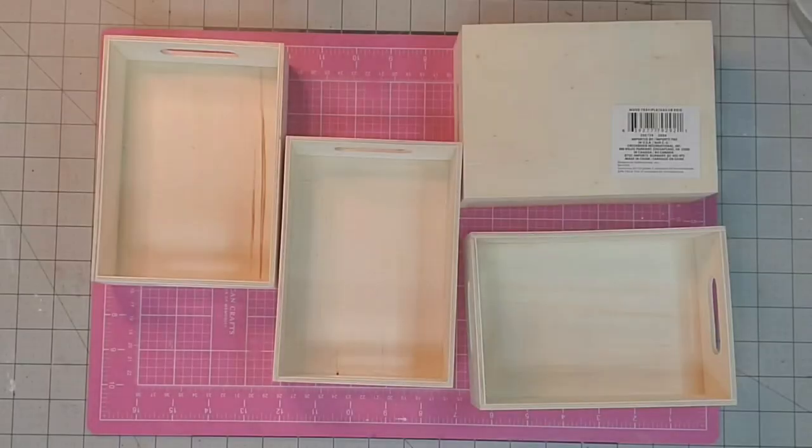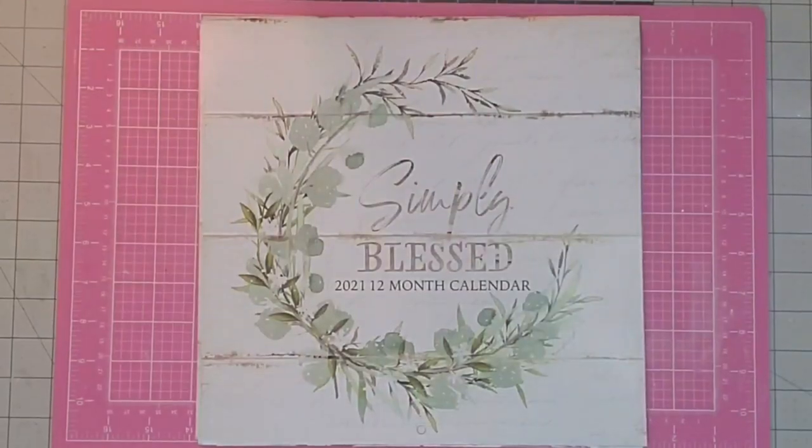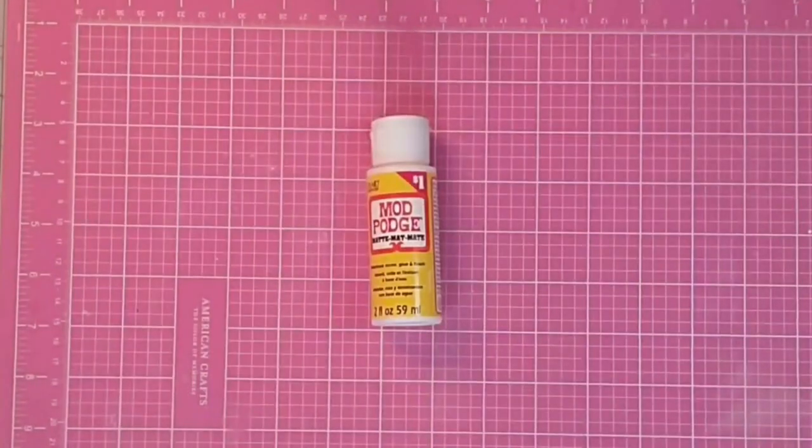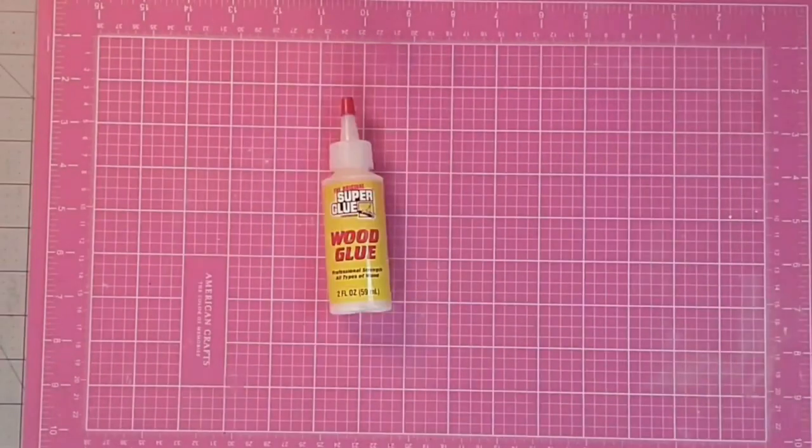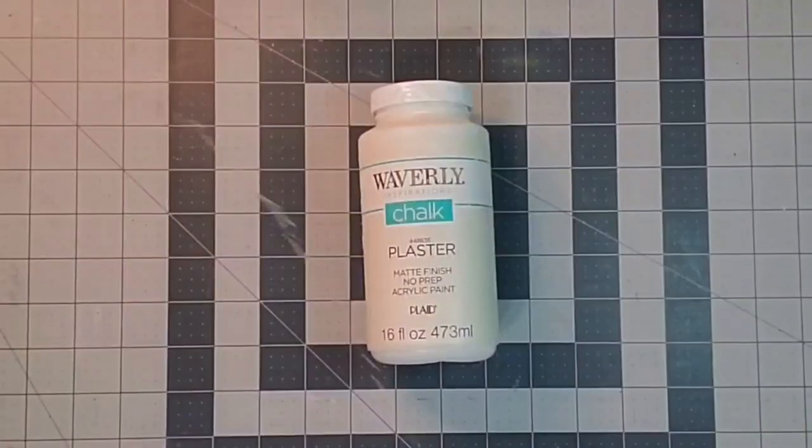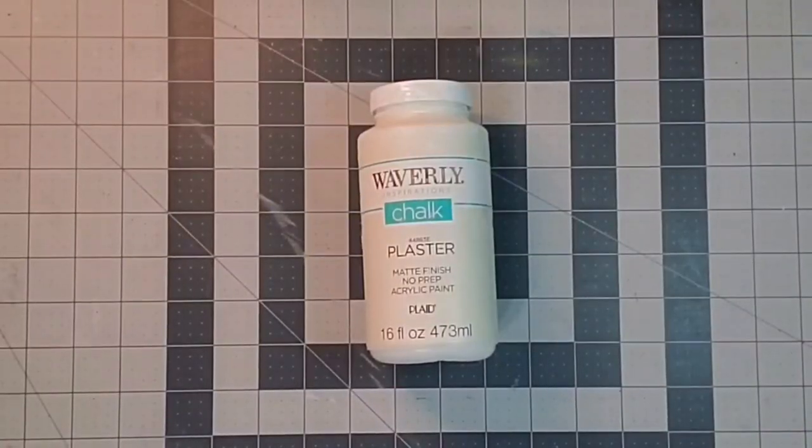Hey y'all, it's Kay. For this project I'm going to be using four of these trays that I got at the Dollar Tree, a page from this calendar that I got at the Dollar Tree, some Mod Podge, some Wood Glue, Nautical Rope, and finally some Waverly Chalk Paint in the color Plaster.